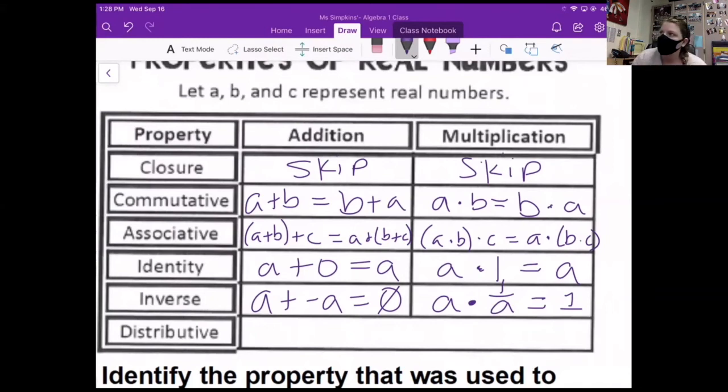All right. Last one distributive. I'm not going to talk too long because we kind of talked about it already, but if I have a number outside of the parentheses and two numbers inside being added or subtracted, I can distribute that number to everything inside the parentheses. So I have a times b plus a times c. So I'm taking this a and I'm kind of giving it or multiplying it to both of those things inside the parentheses.